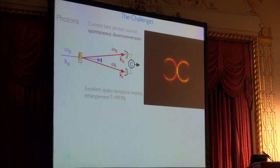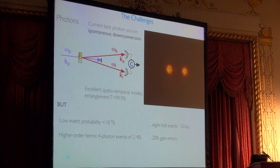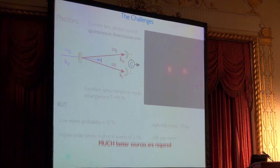Down conversion is the gold standard. We know everything about it, but it's dreadful, because its efficiency is about 10 to the minus 4%, and some of the time it gives you more than two photons. So, you need much better sources.